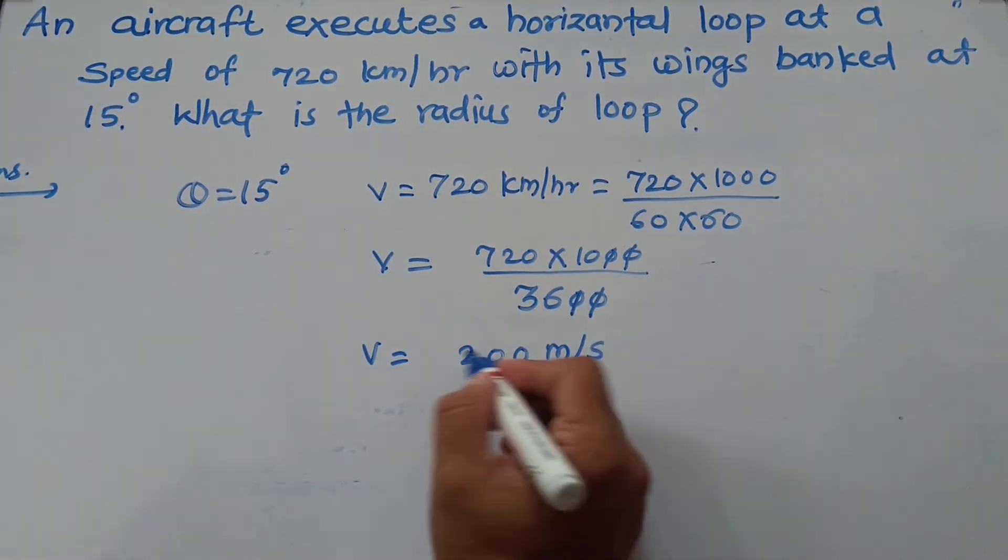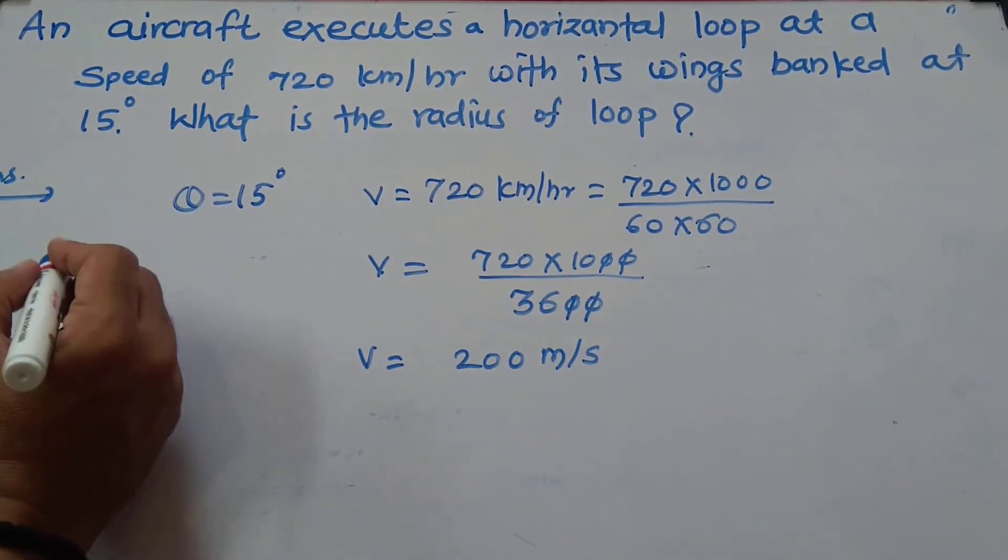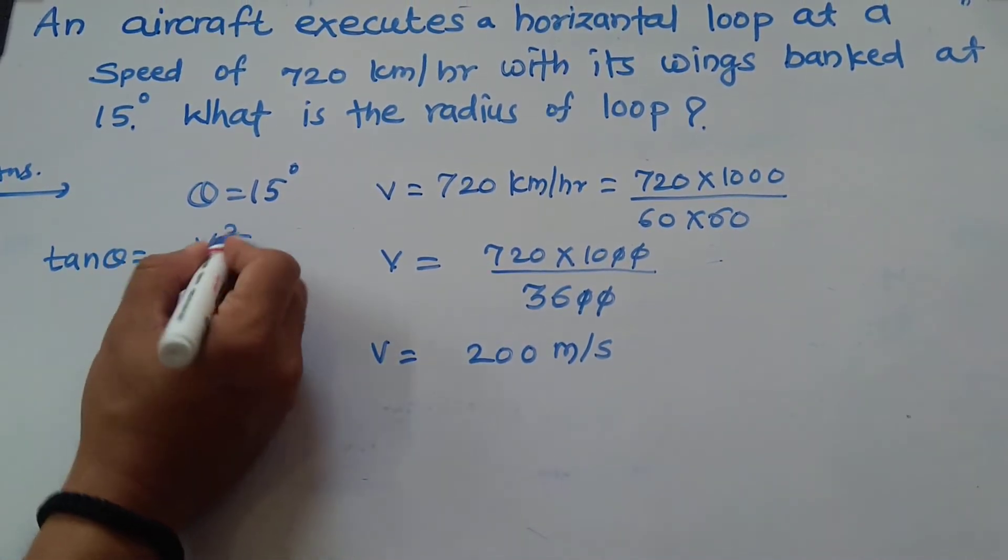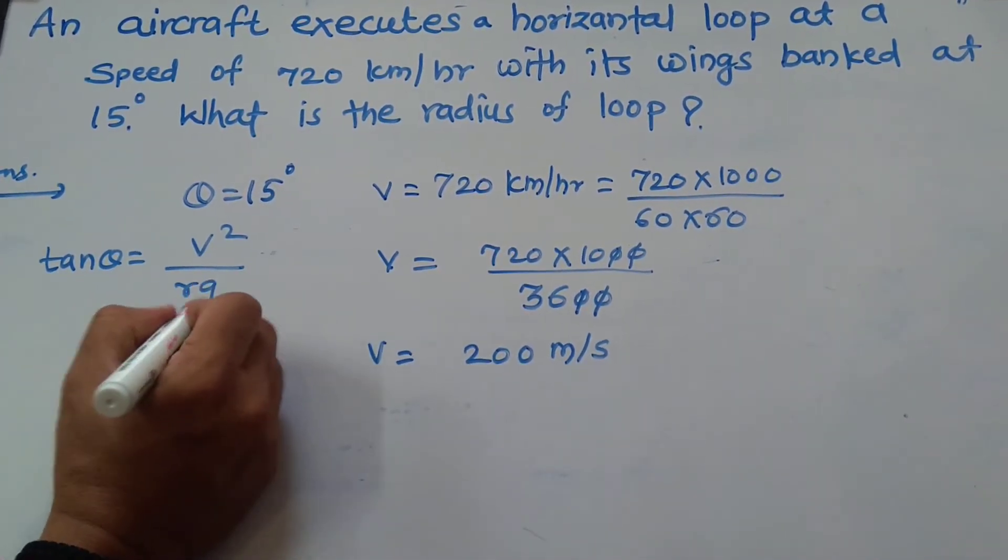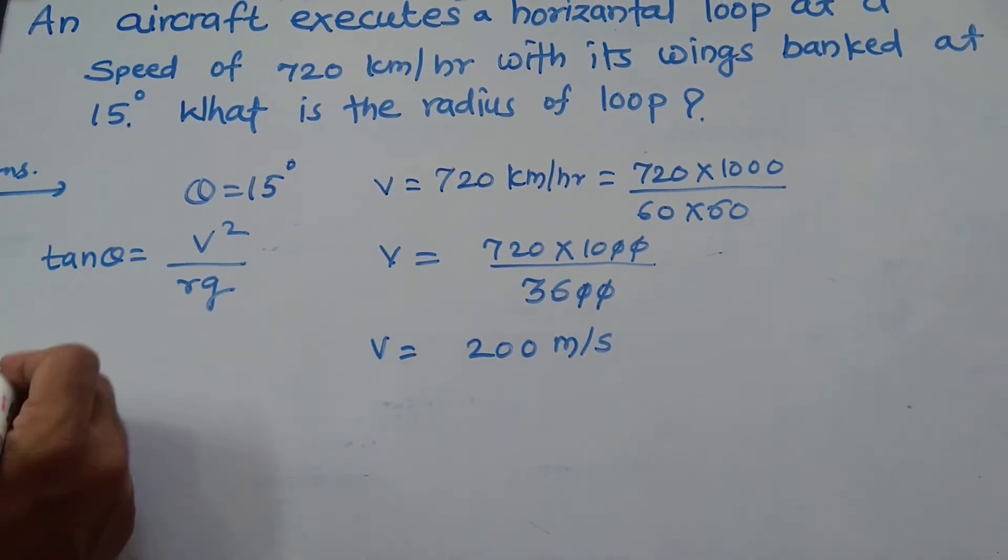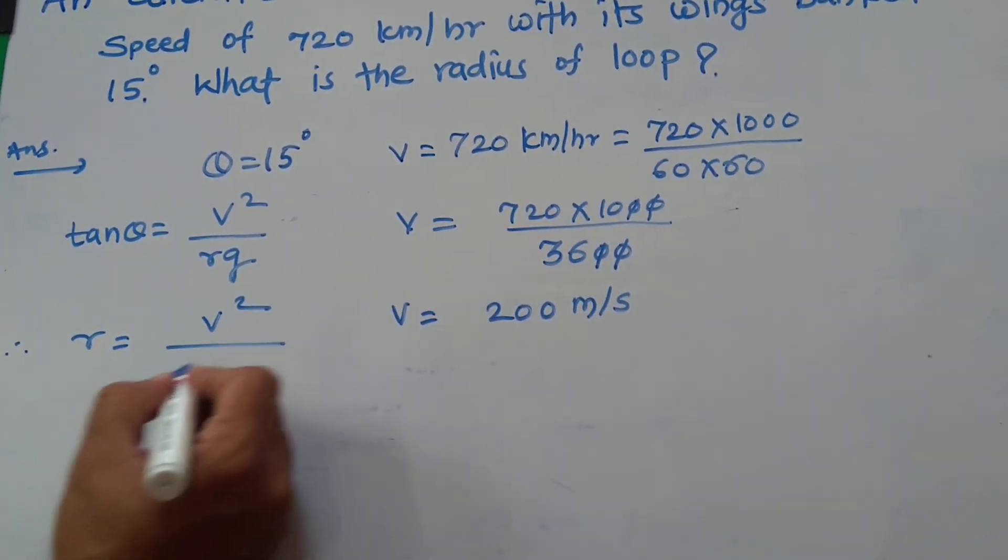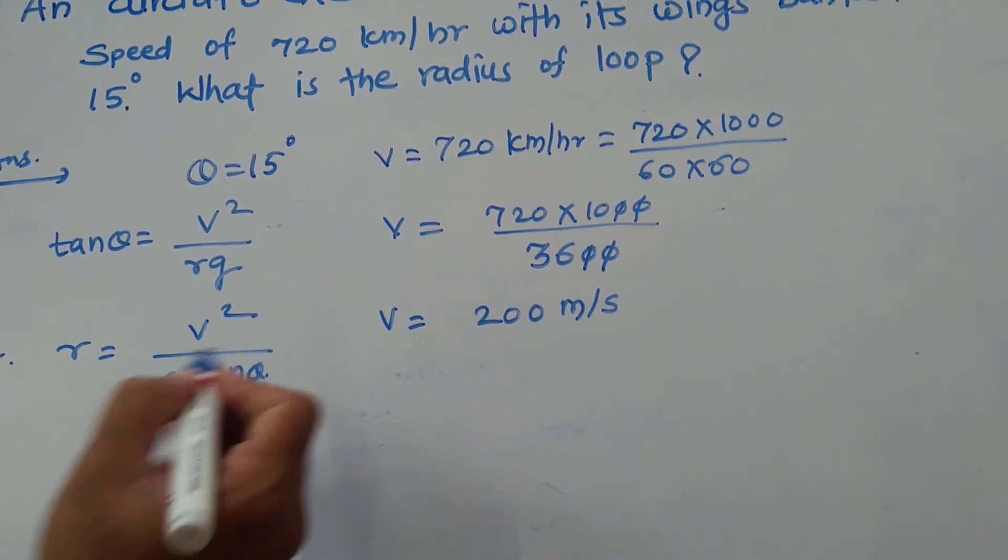Velocity is 200 meters per second. Using the formula tan θ equals V² upon RG, we have to calculate the value of R. Therefore R equals V² upon G tan θ.